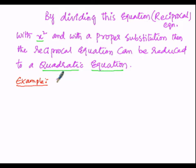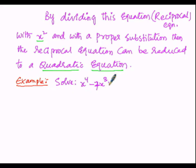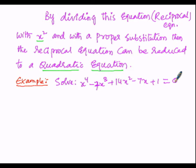Let us solve: x⁴ − 7x³ + 14x² − 7x + 1 = 0. This is a reciprocal equation. It is not in the form of a quadratic equation, since the quadratic general form ax² + bx + c is of second degree, but this equation is of fourth degree.